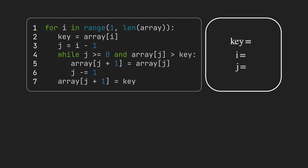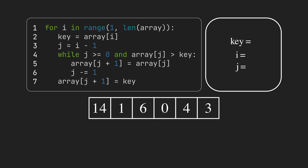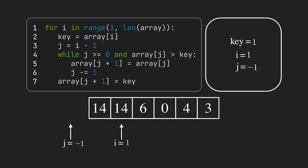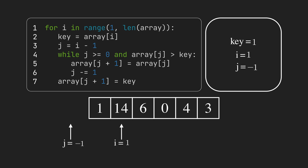Let's see how it works on an array of six. Our assumption is that the first item is sorted, so we consider 14 to be at the correct position and start iterating from the second item at index 1. We copy the value of the second item to the key. We iterate over the sorted section, which has one item: 14 is greater than the key (which is 1), so we copy 14 to index 1 and decrease j. As j is less than 0, the while condition is false, so we copy the key to index 0. Now 1 and 14 are in order. Next, we increase i to 2 and copy the value of index 2 to the key, so the key becomes 6.